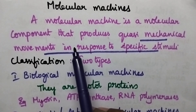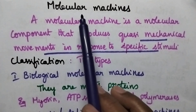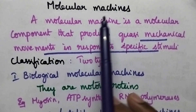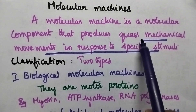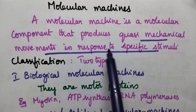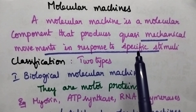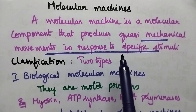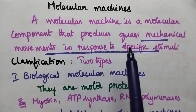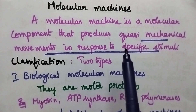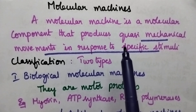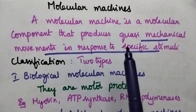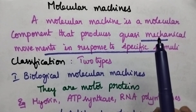Hello students, welcome back to my channel. In this video I am going to discuss in brief about the molecular machines. Molecular machines can be defined as the molecular components that produce quasi-mechanical movements in response to specific stimuli. These molecular machines are responsible for partial mechanical movements in biological systems as well as in artificial systems.